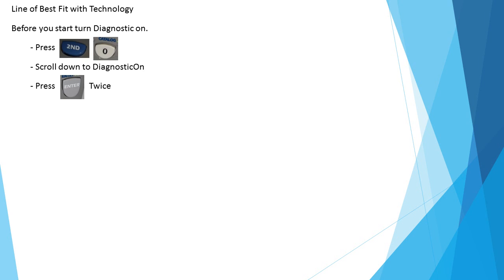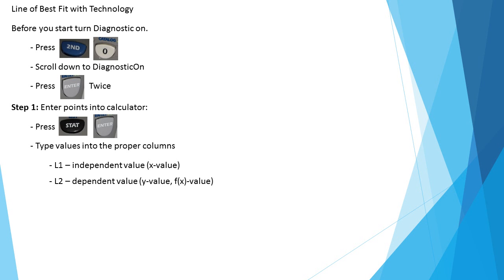What we need to do is go back in our brains to how we did the line of best fit with linear functions. We're going to do the same thing with quadratic functions now, using the graphing calculator. I'm going to give you all the steps, but you're not going to do this at home because most of you don't have the graphing calculator. We will work on them in class. Make sure you have diagnostic on so it can give you all the values you need. To do that, press second zero, scroll down to diagnostic on, press enter twice.